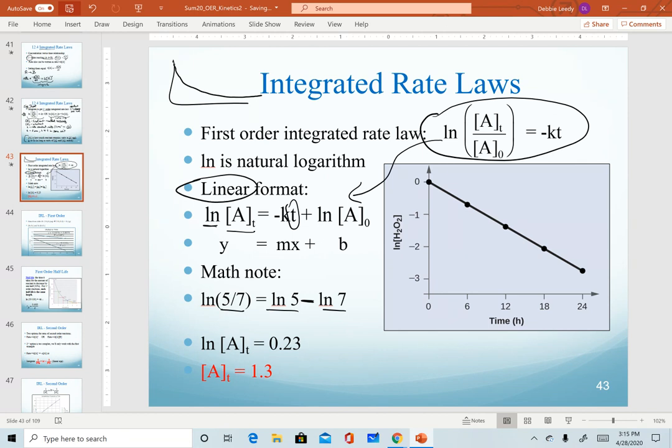One other math note is we are often asked to calculate the final amount of something. So a quick note, if we solve this equation down to the ln of A sub t and we get this number, if I need to solve for my final concentration, remember that ln is a math function. We always have to do the inverse function to get rid of it. And so in this scenario, I would have to raise both sides to the e.